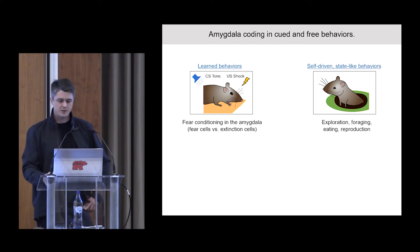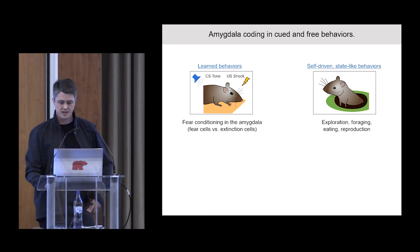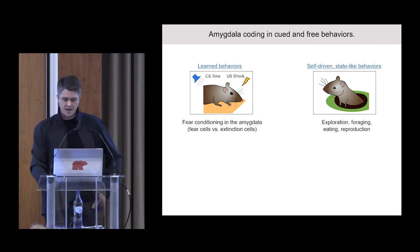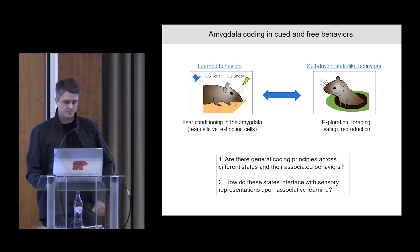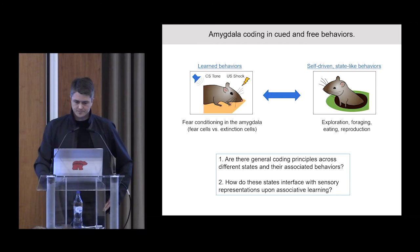The field has primarily studied neural correlates of learned behaviors in the amygdala, but besides fear learning, the amygdala is also associated with non-aversive states like hunger, thirst, or arousal, which drive behaviors like exploration, foraging, eating, or reproduction. We wanted to connect the two and ask: first, are there general coding principles across different states and their associated behaviors? And second, how do these states interface with sensory representations upon associative learning?